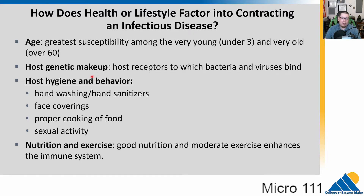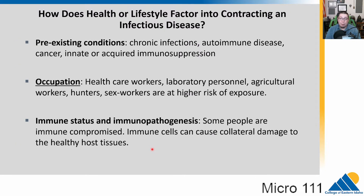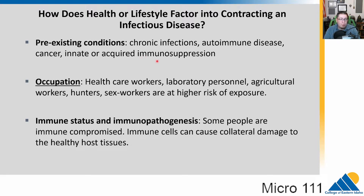Nutrition and exercise matter too — if you're malnourished or obese, you are at higher risk of contracting an infectious disease because your immune system may not be at its peak. Pre-existing conditions also matter: chronic infections, autoimmune diseases, cancer, or immunosuppression. HIV kills T cells, which are part of the immune system, and leads to AIDS — acquired immunodeficiency syndrome — making you more likely to get infections a healthy individual would easily fight off.